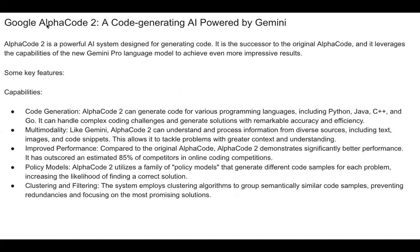I also wanted to mention AlphaCode 2 — a code-generating AI powered by Gemini. You can generate code in complex programming languages: Python, Java, C++, and Go. Imagine what AlphaCode could do to jobs — instead of hiring ten programmers, somebody could get away with hiring one or two. So programmers out there, watch out.